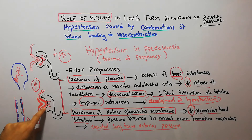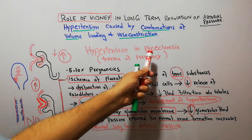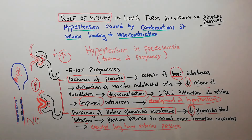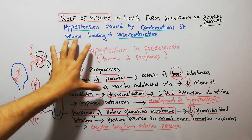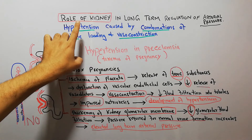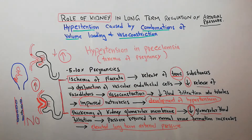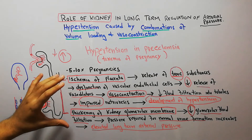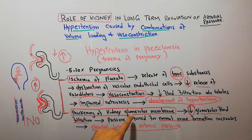Why ischemia of the placenta occurs, or why thickening of the glomerular membrane occurs, is not exactly known. But these are two different theories about the hypertension that occurs in preeclampsia or toxemia of pregnancy. This hypertension involves a combination of volume loading and vasoconstriction occurring at the level of the kidney, demonstrating the kidney's role in regulation of arterial pressure.